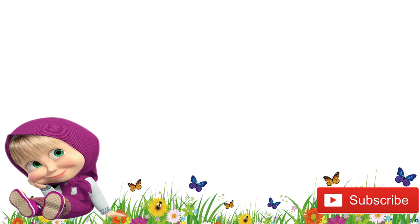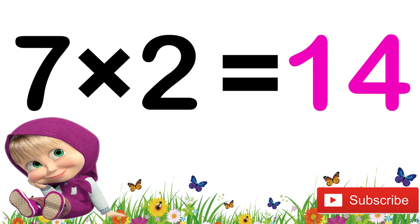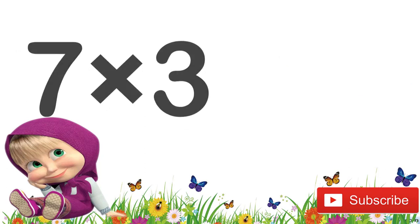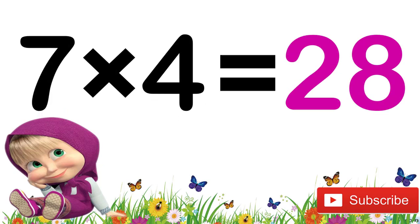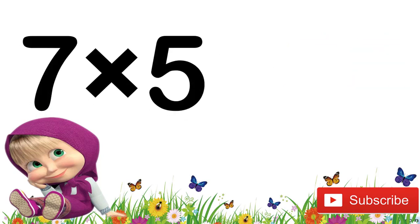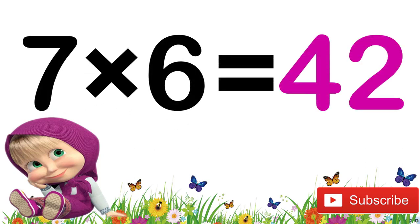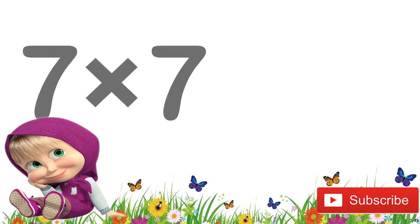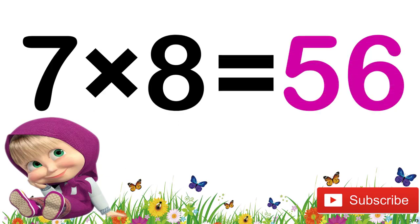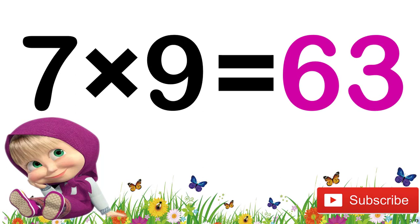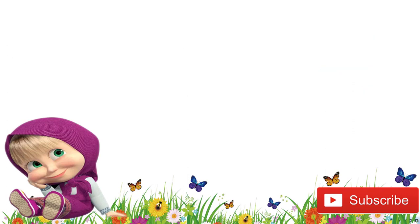7 nines are 63. 7 tens are 70. Now let's revise again children. 7 ones are 7. 7 twos are 14. 7 threes are 21. 7 fours are 28. 7 fives are 35. 7 sixes are 42.